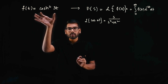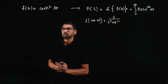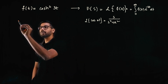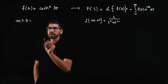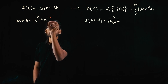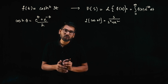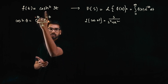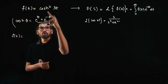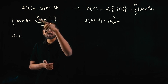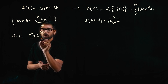First we simplify using trigonometry and algebraic formulas. The formula for cosh is: cosh(θ) = (e^θ + e^(−θ)) / 2. So cosh is basically the sum of two exponential functions divided by 2. Applying this to f(t) = cosh²(3t), with θ = 3t, we get f(t) = [(e^(3t) + e^(−3t)) / 2]².